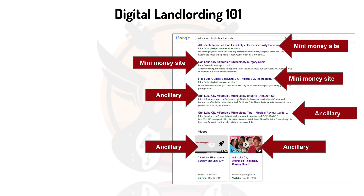Well, look at this beautiful picture right here. You might have seen this example before, maybe it's the first time you've seen it, but this is it in a nutshell, in a screenshot. We've got a mini money site — what we call it, our mini money site — which is like a three to five page little site that we can start using to send all of our results into. And then we've got all of our ancillary pages. It's all about this.